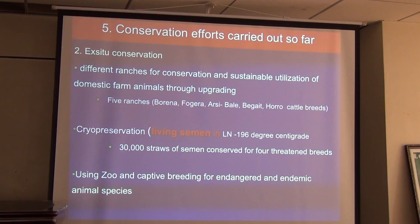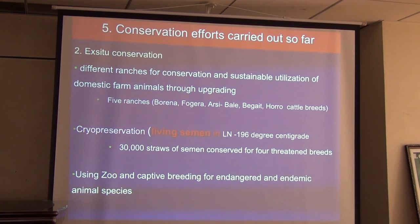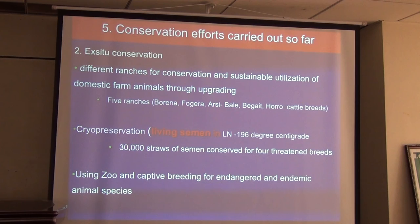We also use zoo and captive breeding systems as a type of ex-situ conservation, especially for highly threatened species — to increase their numbers so that they can eventually return to the natural ecosystem. This approach is employed by different stakeholders.